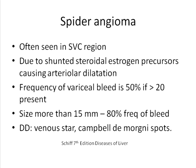Spider naevi are often seen in the SVC region as described in the literature, but we do see them across the entire upper trunk and also in the back. The reason for their occurrence in the SVC region has been described as the smaller caliber of the superficial blood vessels there, but there is no clear proof for that.